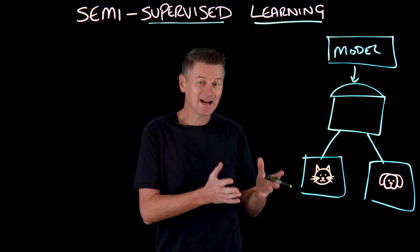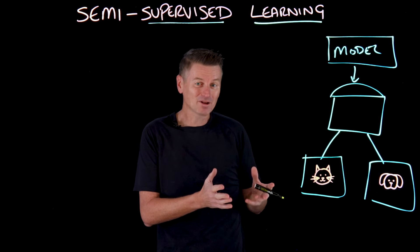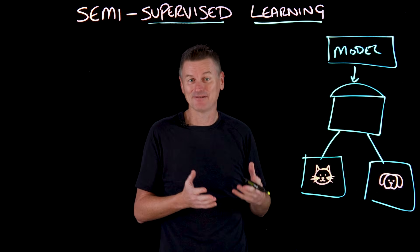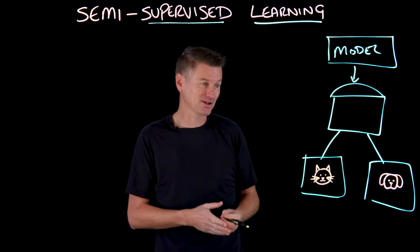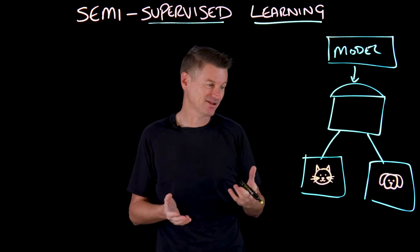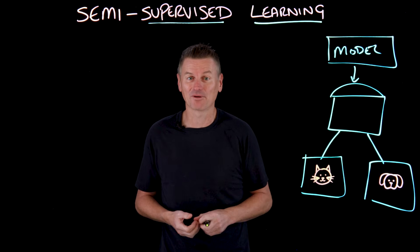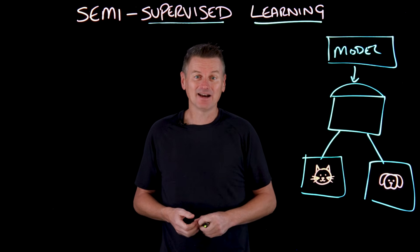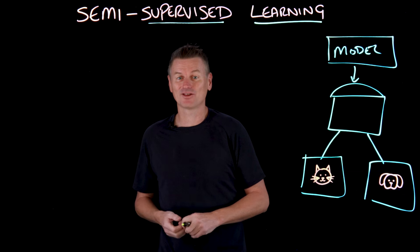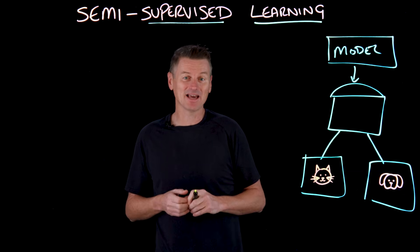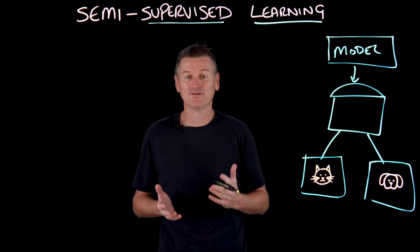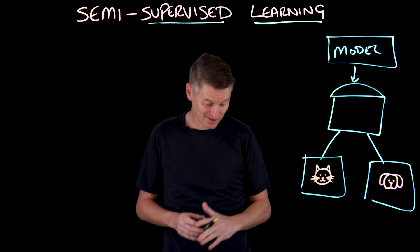Then during training, the model makes predictions and evaluates the accuracy of those predictions through something called a loss function, which asks: was I right? Was it really a cat or a dog? And it makes adjustments using techniques such as gradient descent that update the model weights to improve future predictions.